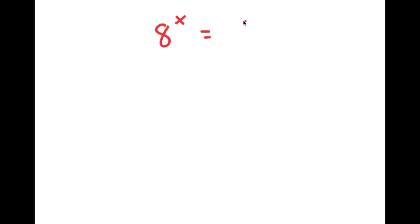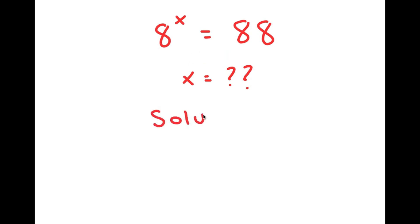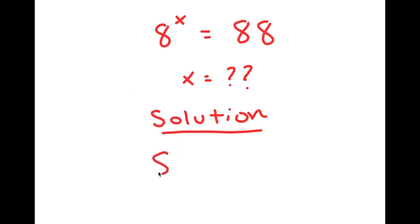In this video, I'm going to be solving the equation 8 to the power of x is equal to 88. My only variable in this equation is x, so that's what I'm going to be solving for. I'm going to first start by rewriting my equation down here so I have a little more solving space. My equation is 8 to the power of x is equal to 88.